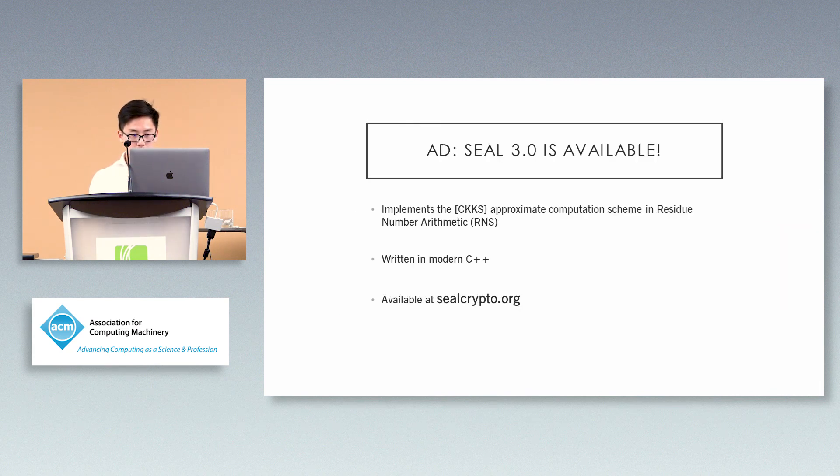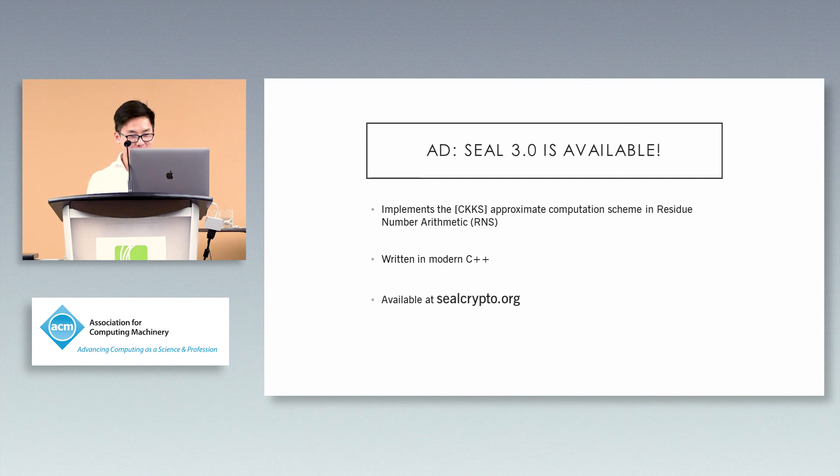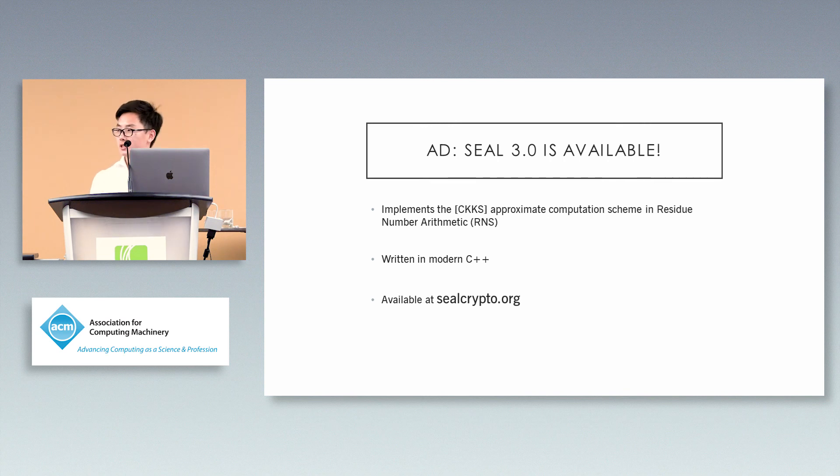The second-to-last slide is advertisement that I just learned. The 3.0 version of the SEAL library is available and implements the CKKS approximate computation scheme in residue number arithmetic, also known as RNS. It's written in modern C++ and is available at sealcrypto.org.